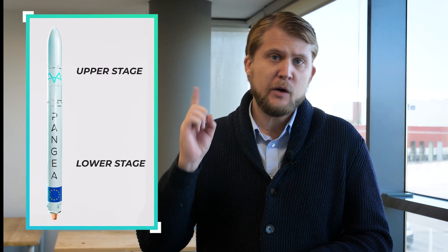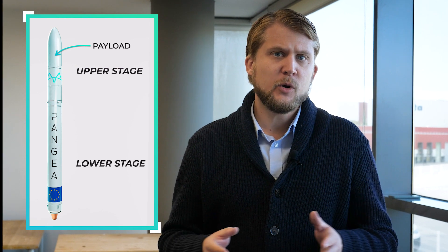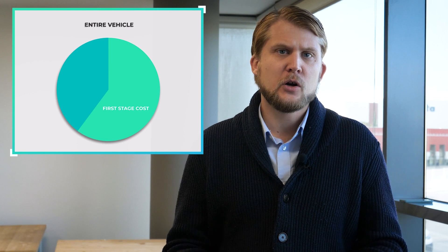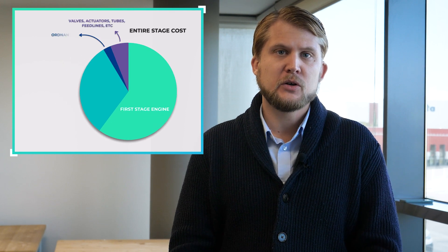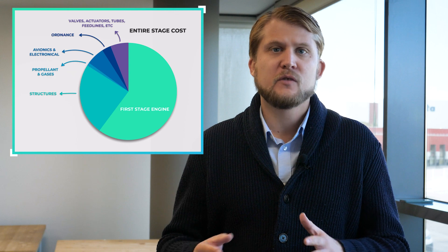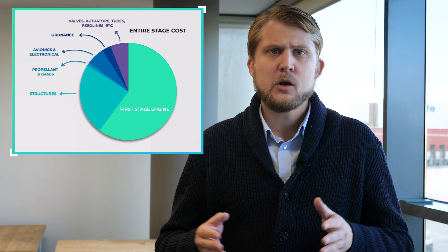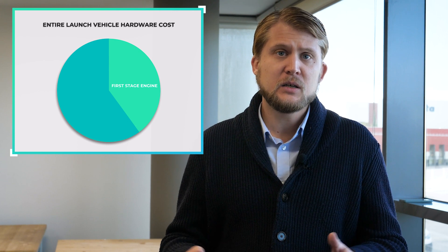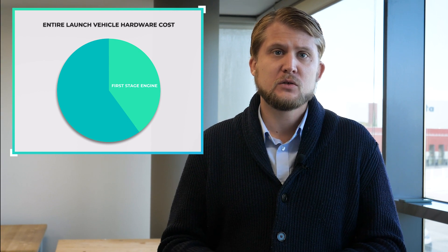Launch vehicles usually consist of two or more stages — an upper and a lower stage stacked on top of each other with the payload on the very top under the fairing. For a typical launch vehicle the total cost of the first or lower stage as compared to the entire vehicle is about 60 to 70 percent. In turn the cost of the main engine as compared to the entire first stage is also in the size order of 60 percent, equating to around 40 percent of the hardware cost of the entire launch vehicle. Indeed the main engine is one of the most important parts to reuse.